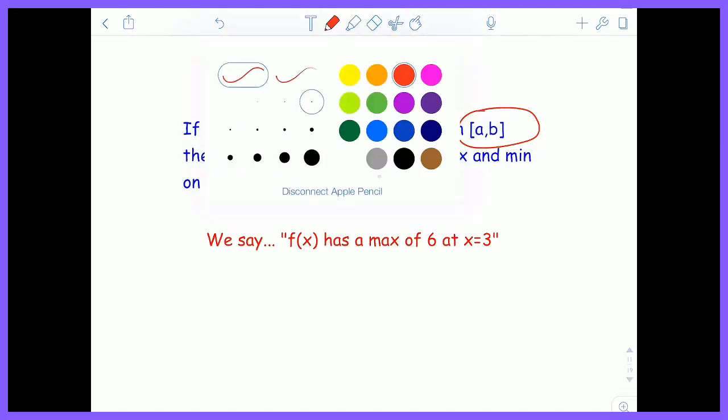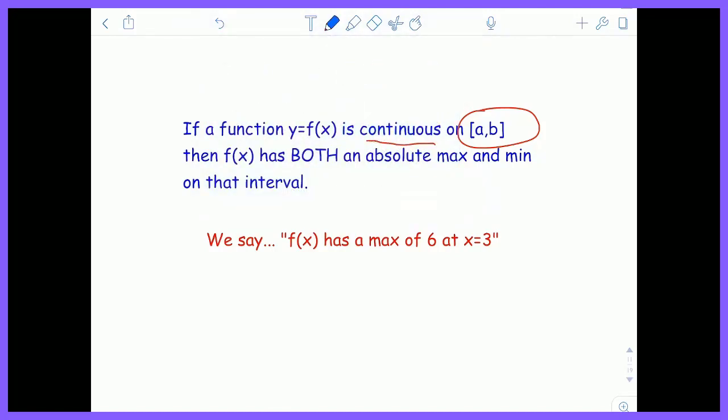In calculus, we're going to word it like this. We say that f(x) has a max of 6, so this is the y value or the function value, located at x equals 3. So a max of 6 at x equals 3. We're giving the x value and the y value simultaneously.